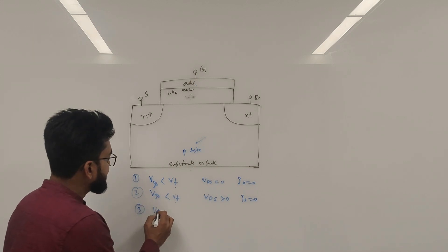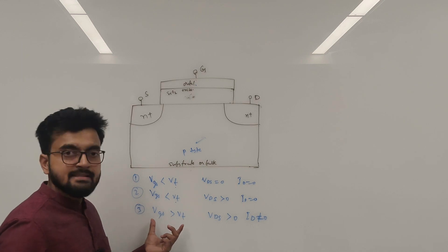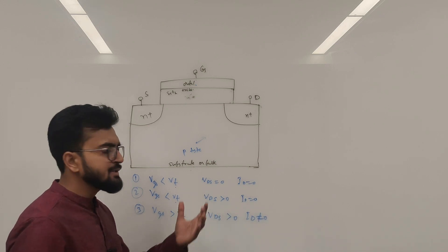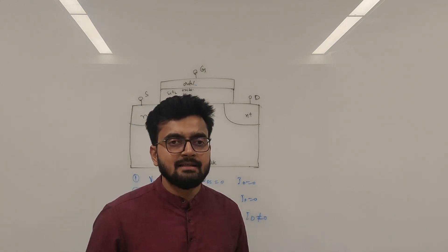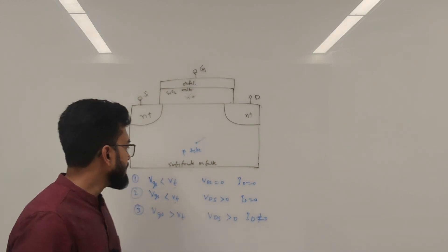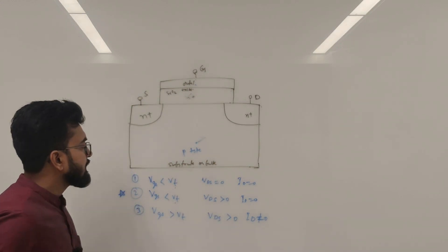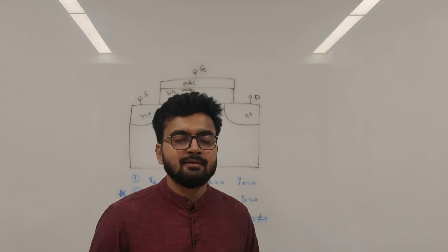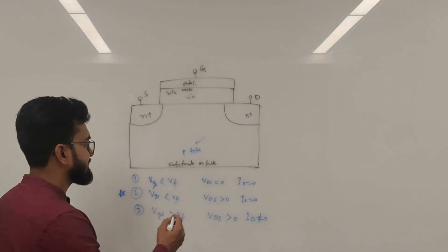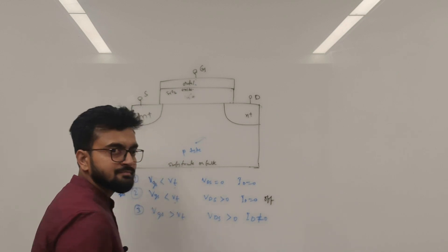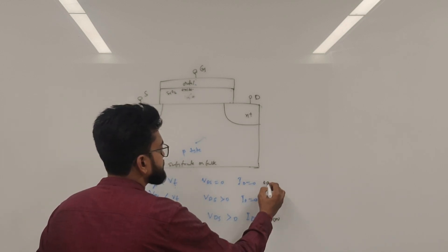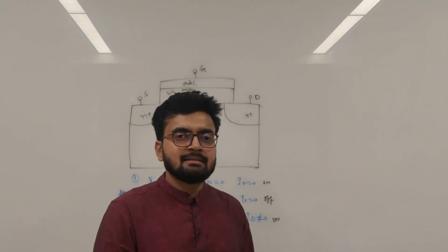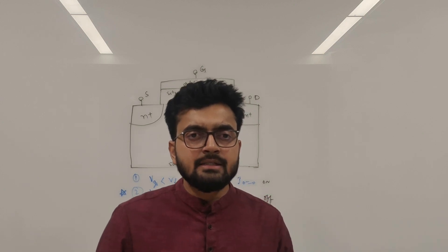Now if we consider case three, where VGS is greater than V-threshold and VDS is also positive, there would be some current flowing in the transistor from drain to source. But if you look at condition two, technically we shouldn't have any current — but that's not the reality. We see some current even though the device is in the off state. Ideally the device must be off and there shouldn't be any current, but there is some current, and one of them is gate-induced drain leakage current.